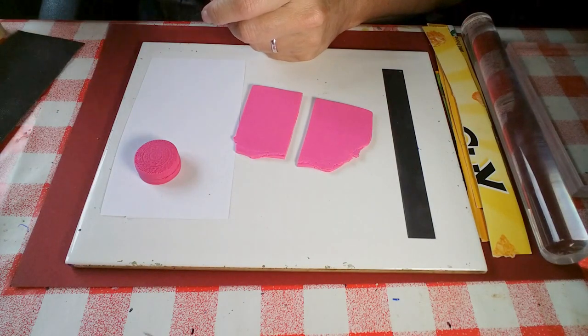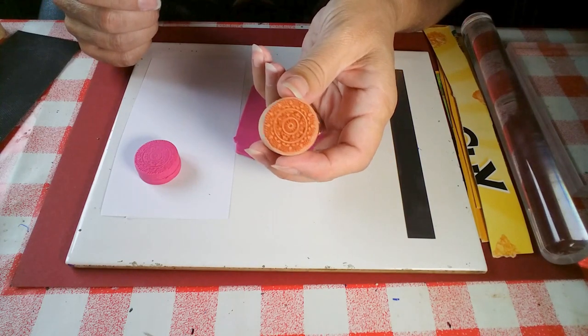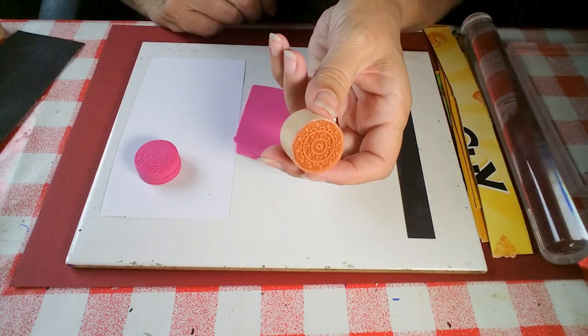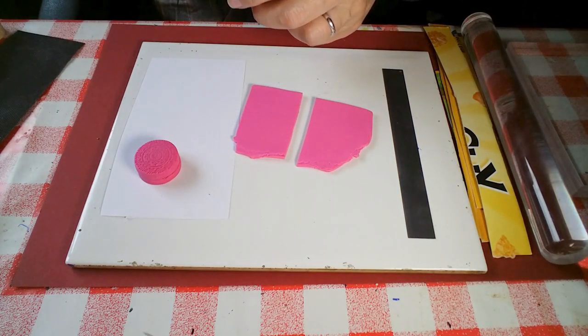I went for one that had concentric circles because that's something that you see on checkers a lot. Now these are an inch wide and that fits very well with my chess board. If you have a different size chess board, you might say, well I can't get one that fits with the size of the squares on my board.